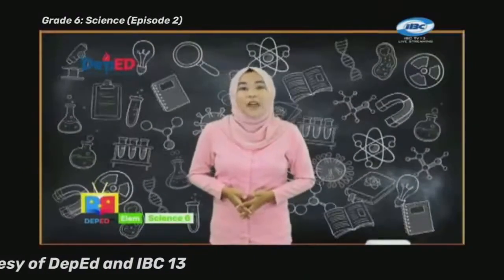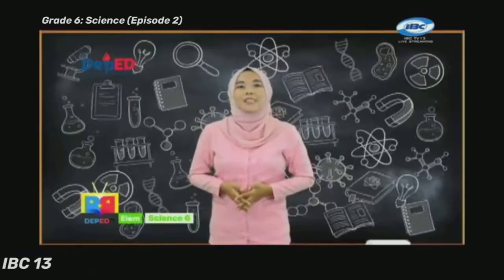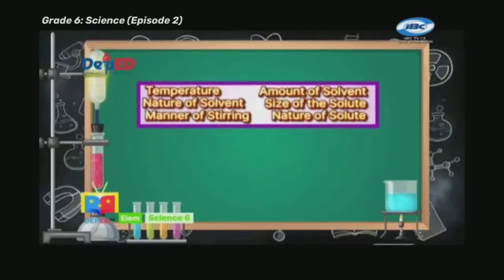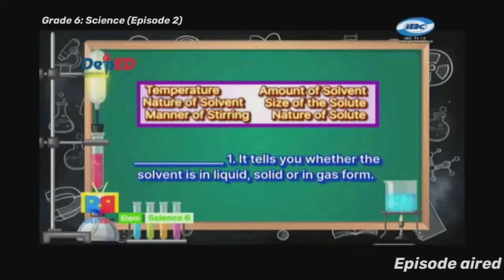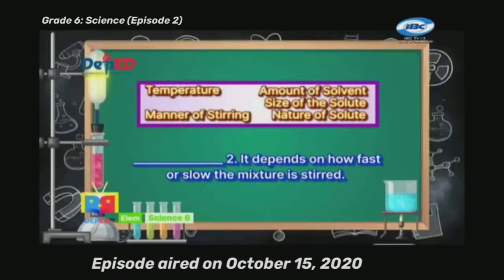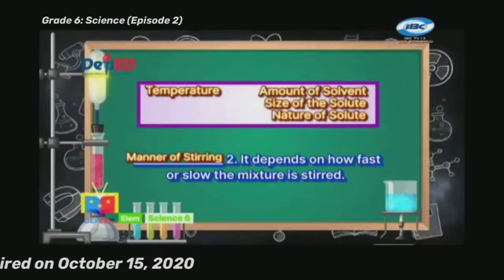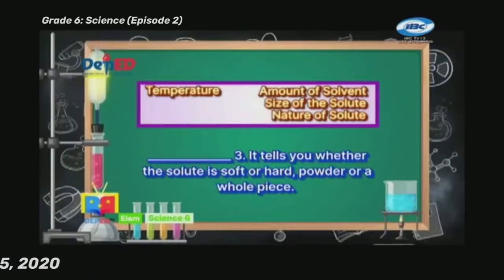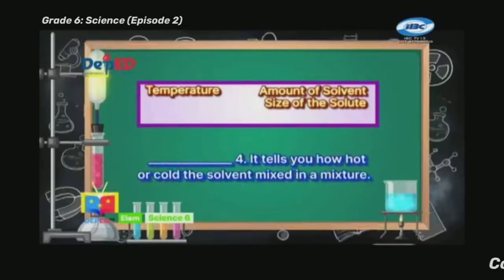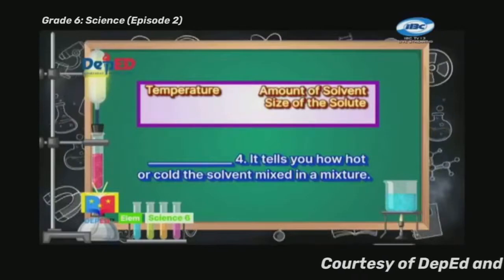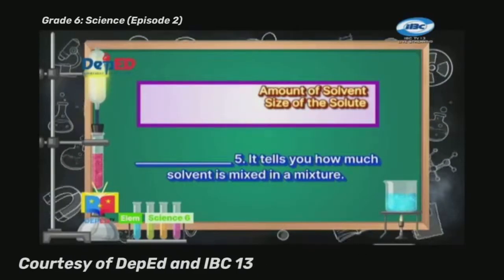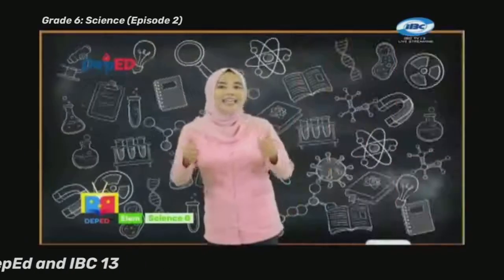In the given situation, identify what factors affect the solubility of the following materials. Number one: it tells you whether the solvent is in liquid, solid, or gas form — the correct answer is nature of solvent. Number two: it depends on how fast or slow the mixture is stirred — manner of stirring. Number three: it tells you whether the solute is soft or hard, powder, or a whole piece — nature of solute. Number four: it tells you how hot or cold the solvent is — temperature. Number five: it tells you how much solvent is mixed in a mixture — amount of solvent.